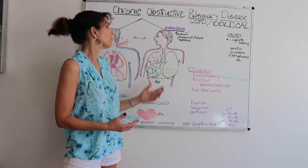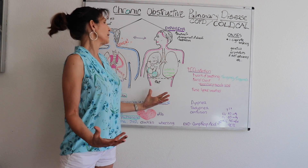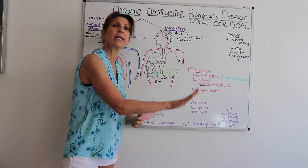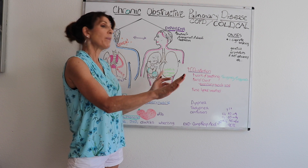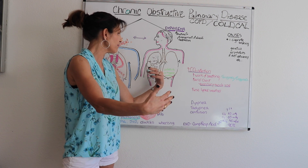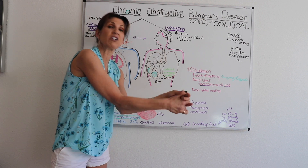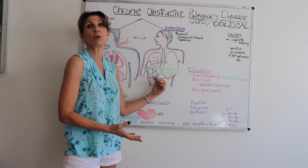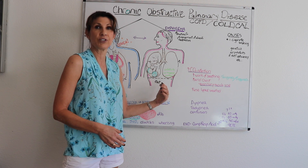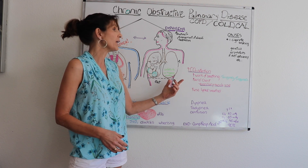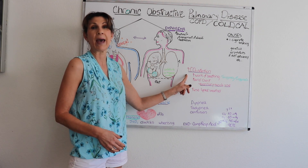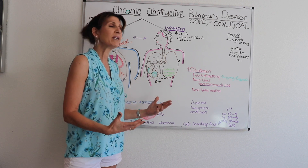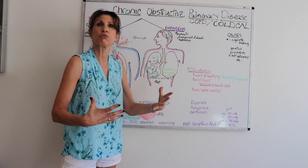The emphysema patient is also called the pink puffer. Because they have air trapping — they're able to get air in, but their alveoli are stretched out and the terminal bronchioles are collapsing — they're not able to exhale CO2 normally. So they are CO2 retainers, chronically in a respiratory acidosis.